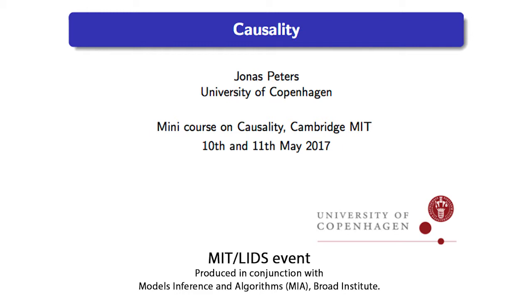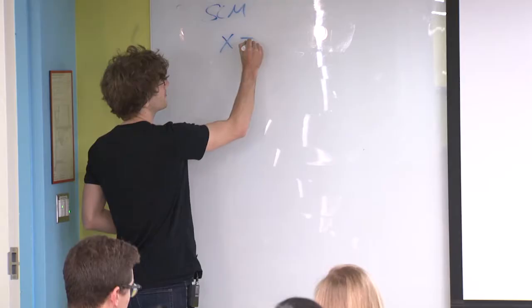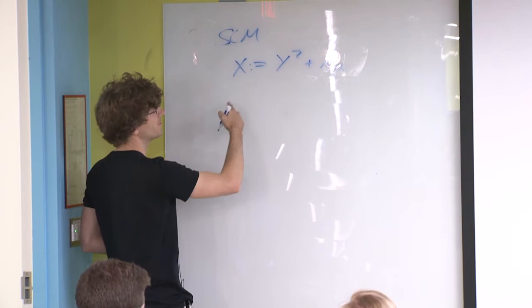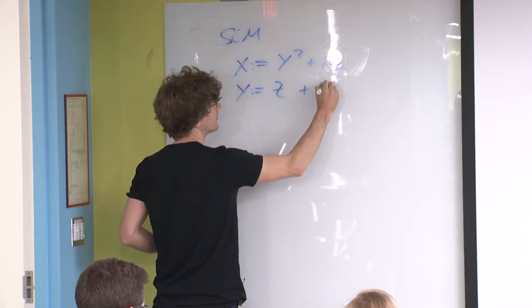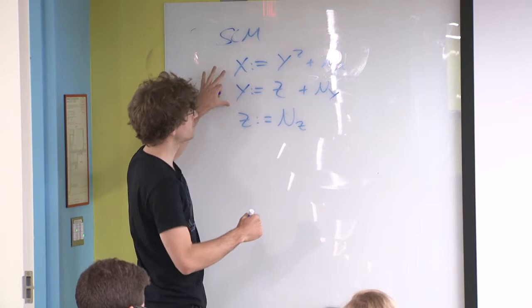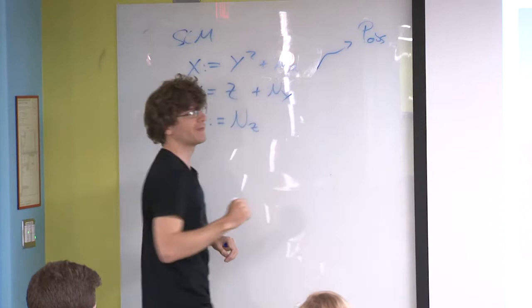We looked at a specific type of causal model: structural causal models. We had a set of structural equations. So if you're interested in three random variables, one example may look like this. You have a random variable X, it's a function of Y, Y is a function of Z, and Z may just be noise. Because of this acyclic structure, it was quite easy to see that a structural causal model like this induces a joint distribution — the observational distribution.